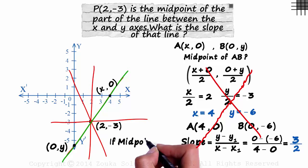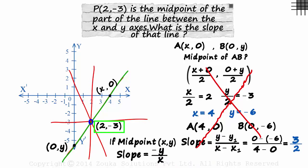If the midpoint of the segment is x comma y, then the slope of that line will be minus y over x. Here, the midpoint was 2 comma minus 3 and the slope is minus of minus 3 over 2. Remember this well. If the midpoint is x comma y, then the slope is minus y over x.